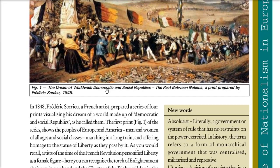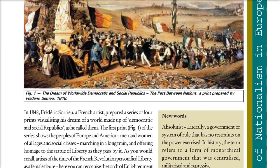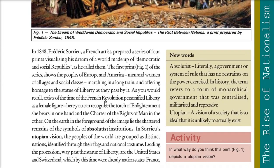In 1848, Saurio — a French artist — prepared a series of four prints or visuals, expressing his dream for democratic and social republics. This first picture shows people of Europe and America — men and women of all ages and social classes — marching in a long train and offering homage to the statue of liberty. During the French Revolution, a female figure was key to representing liberty; it was personified as a female figure.